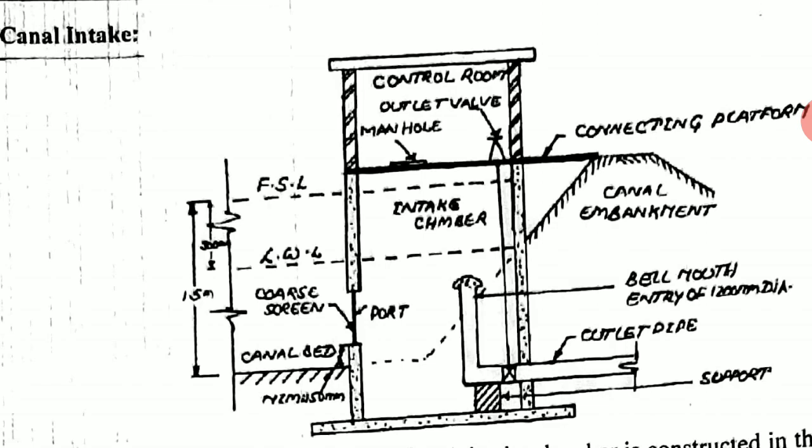When the water is stored in the intake chamber, it enters into the intake well through the outlet pipe. A valve is provided here. When the intake chamber is filled with water, we operate the outlet valve, and the water starts moving toward the outside through the outlet pipe.